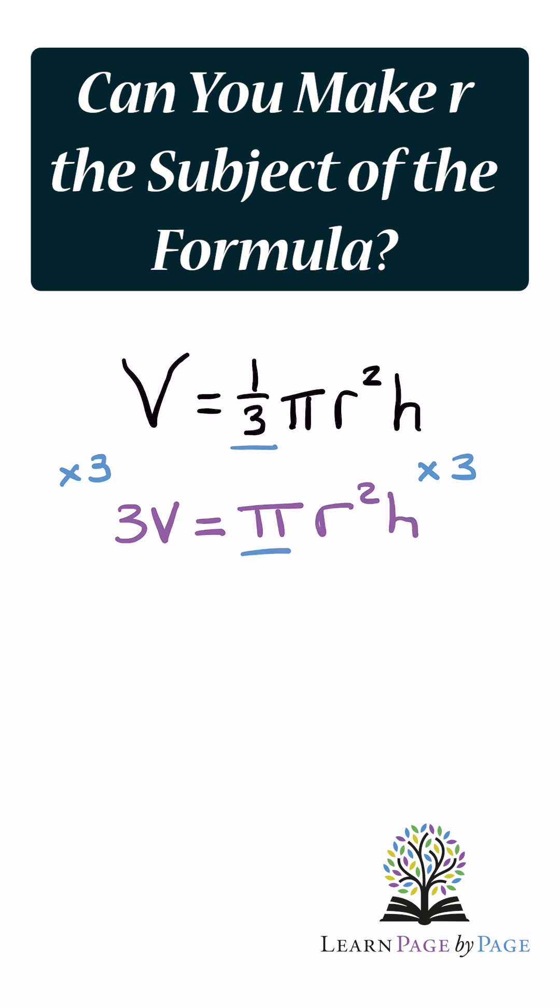Now we want to move pi and h, and at the moment they're both being multiplied. So to move them, we do the opposite, and that is divide. So we divide both sides by pi h.